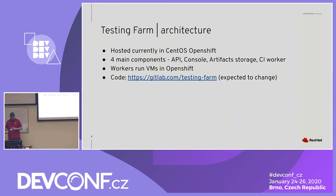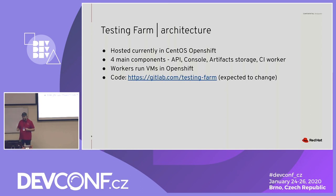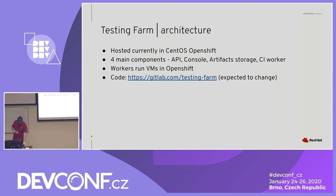Very briefly, the current implementation is all about testing an operating system. We run VMs, and we test the operating system on those VMs. You need mostly VMs to truly test the operating system — containers are not sufficient in most cases. In the current architecture, we use CentOS OpenShift infrastructure for running the VMs. We run privileged containers, and inside those we run VMs where we run the workloads. The service currently has four main components: an API that services can use to submit testing requests, a console where users interact and can look up test logs and results, artifact storage, and CI workers who run the testing.